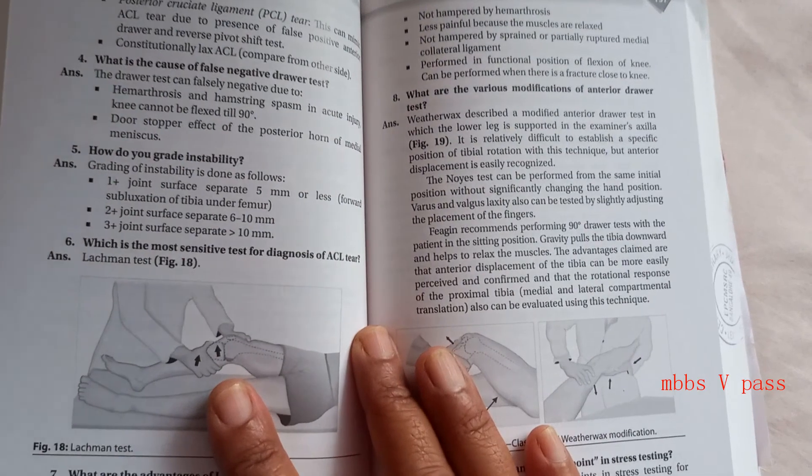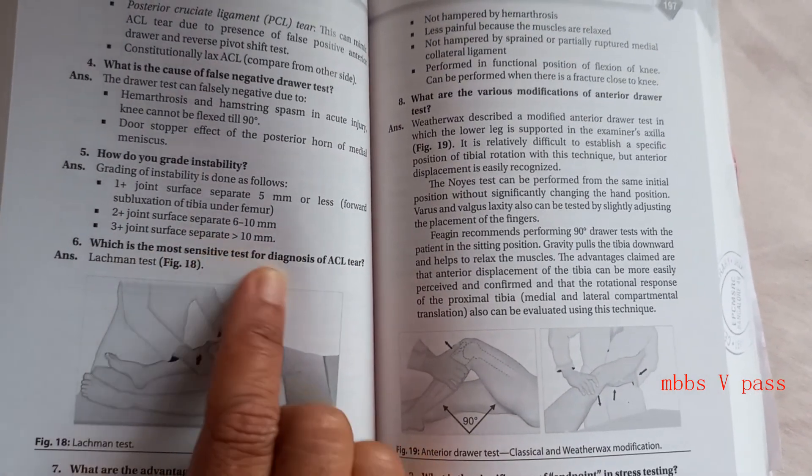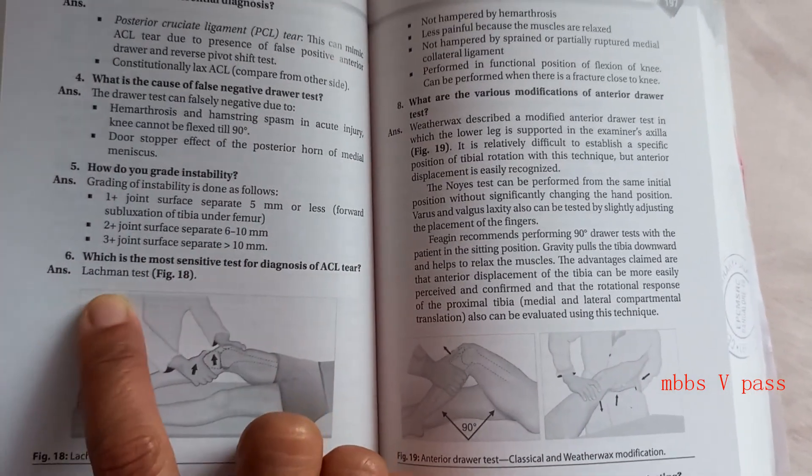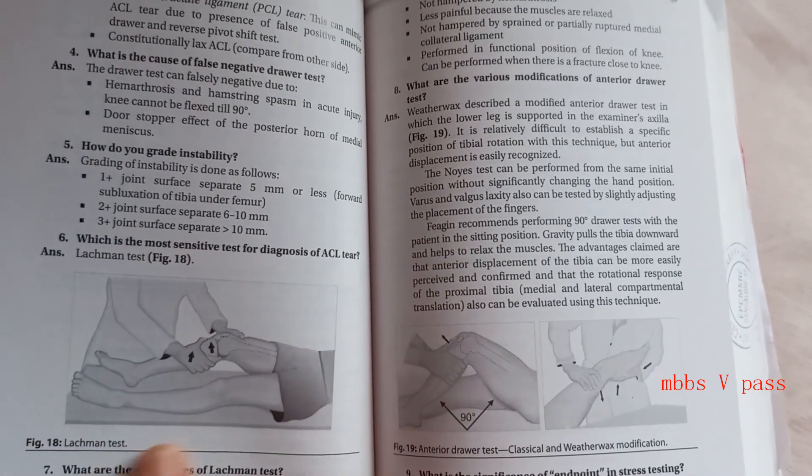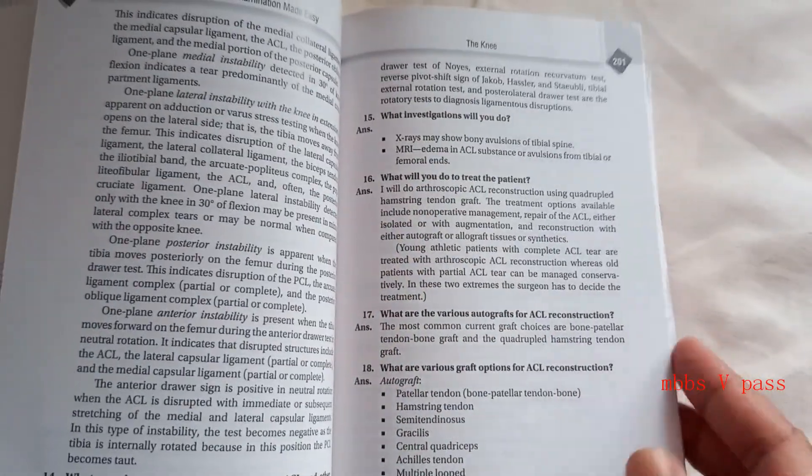ACL tear, how will you find out? Lachman test. Most sensitive test for a diagnosis of ACL tear. You should know how to do it. What are the advantages of Lachman's test? What is anterior drawer test? This book is more like before your viva, it will be very useful.